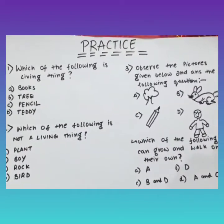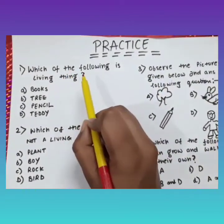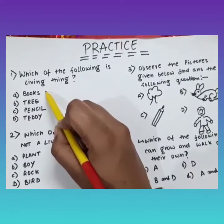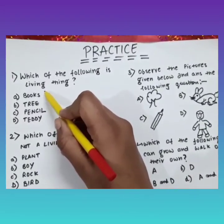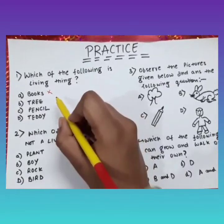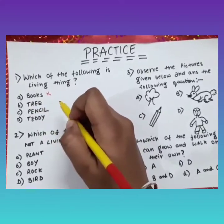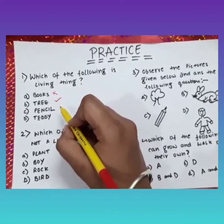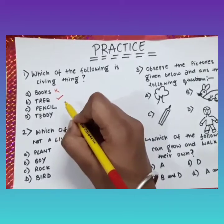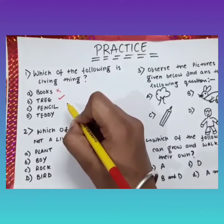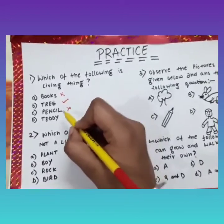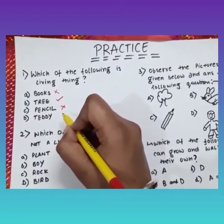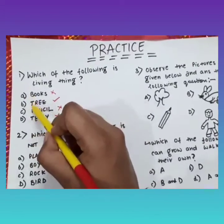Now let us practice some questions. The first question is: which of the following is a living thing? Does a book breathe or move? No — it is not a living thing. The second option is tree. Does a tree grow? Yes — so it is a living thing. Does a pencil move or grow? No — wrong option. Does a teddy breathe or grow? No — also wrong. So the right answer is tree.